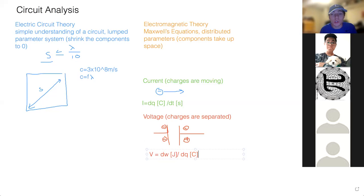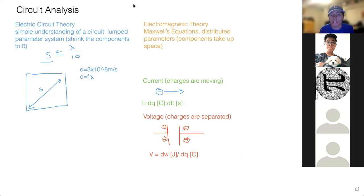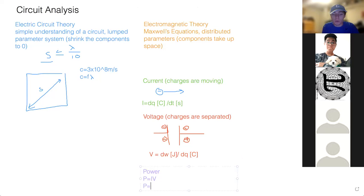You'll learn that an electron has a charge of 1.6 times 10 to the negative 19 Coulombs in Physics 152. Now that we've learned about voltage, the last major one is power. Power is a combination of the two. We can write it as P equals I times V. Current is dq/dt — the amount of charge per unit time — and voltage is dw/dq — the amount of work per unit charge.